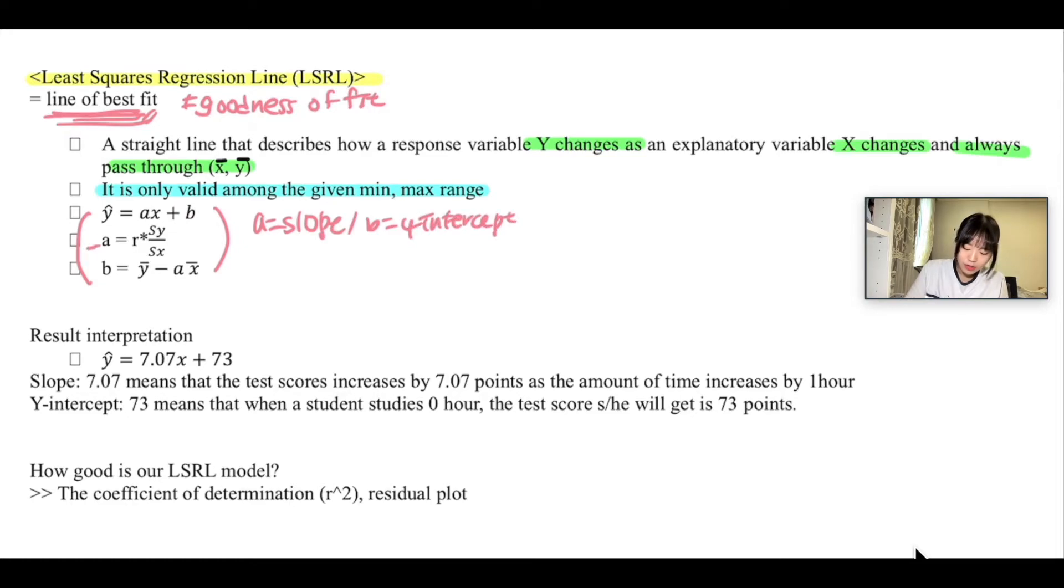Here is how we compute the values for the slope and y-intercept. This is very important to remember: a equals r, which is the correlation (you can check the video I have made for correlation r if you don't know what this is), and you multiply that by the standard deviation of y over standard deviation of x. The y-intercept will be equal to ȳ minus a, which is the slope, times x̄.